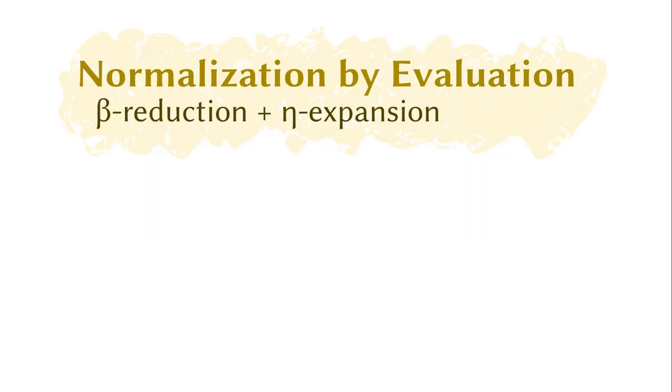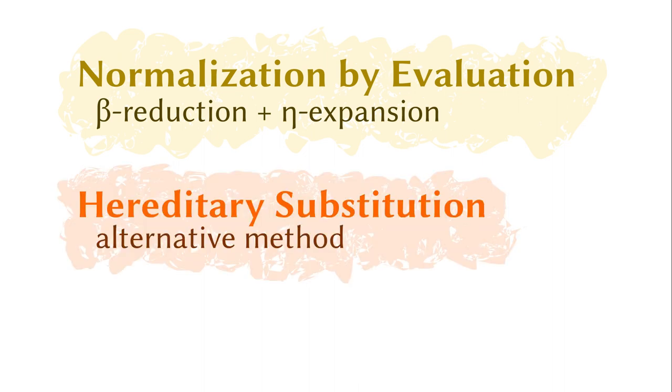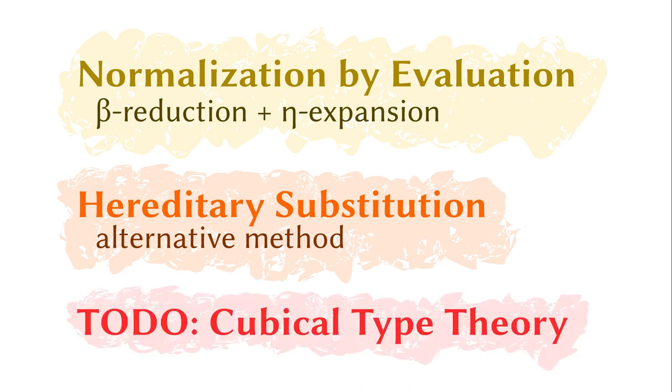To summarize, by composing the evaluation and ratification steps, we can normalize equal terms to identical expressions. The method we presented was called normalization by evaluation. There are also other ways to normalize a term, such as hereditary substitution, but that would be another lecture. As for cubical type theory, we already have some ideas but are still working on it. That's all for today. Please remember to vote on the topics. Bye.